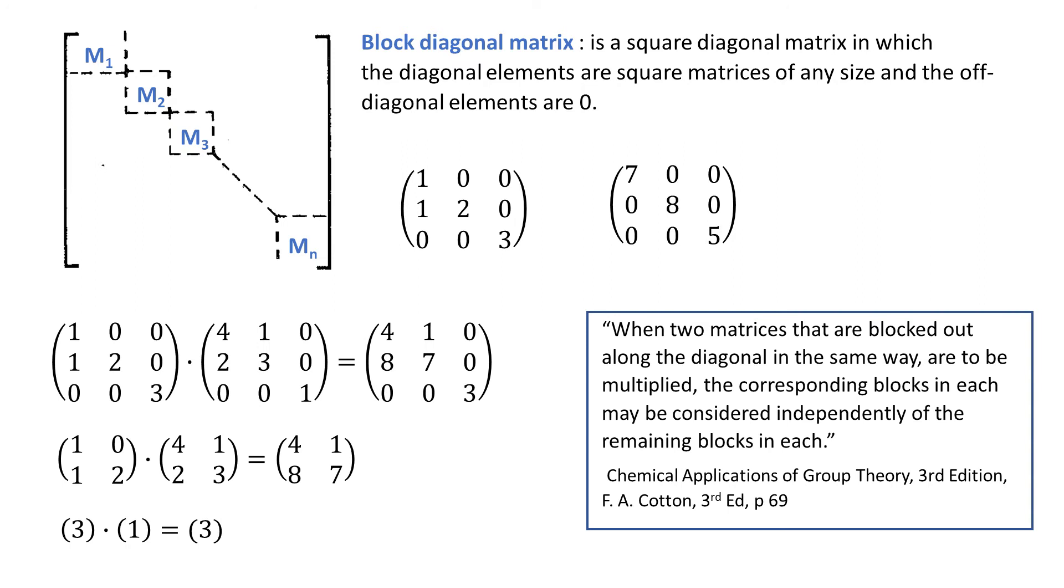And the beauty of such matrices is that we can multiply and effectively treat each of the blocks separately. So what we are doing is actually reducing the original matrix to matrices of smaller dimensions.